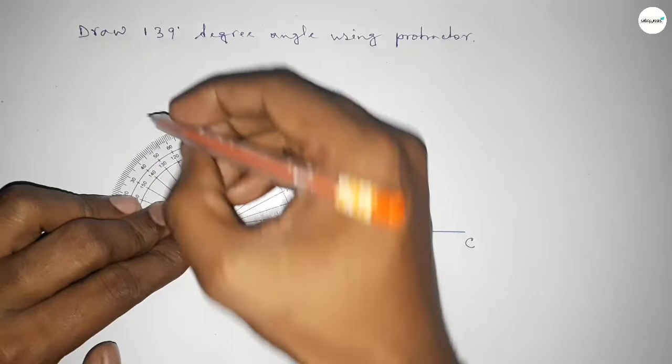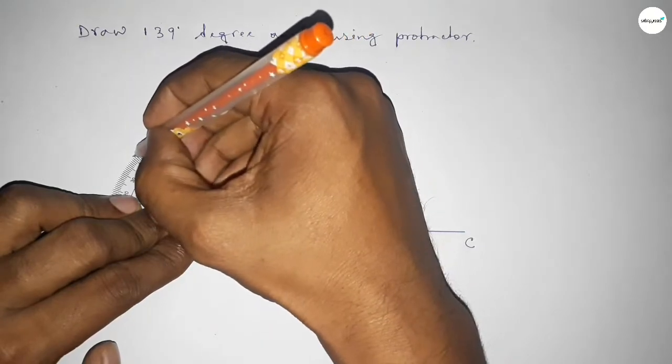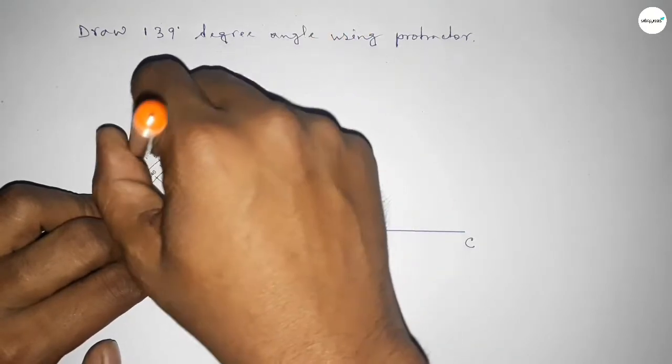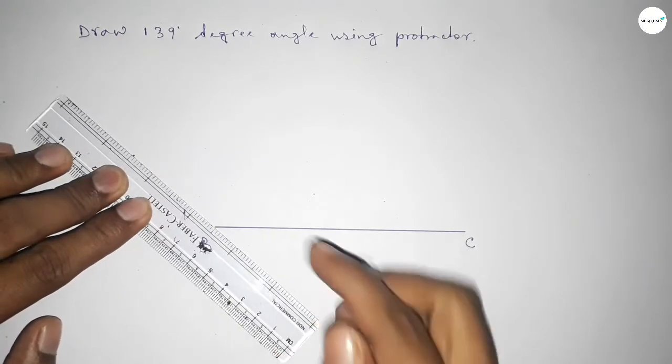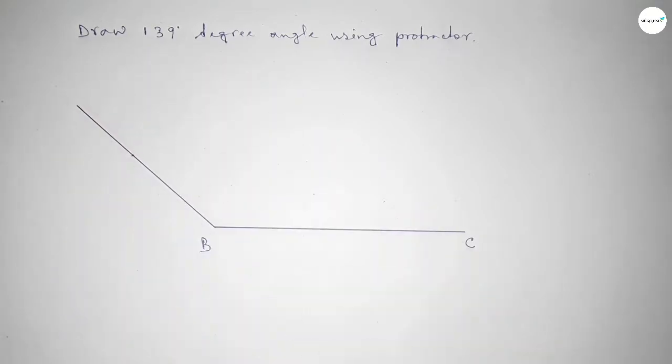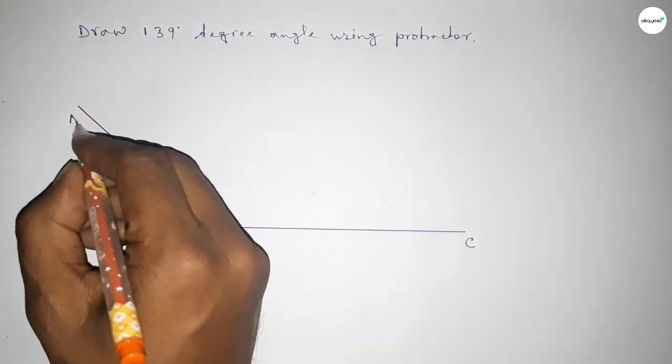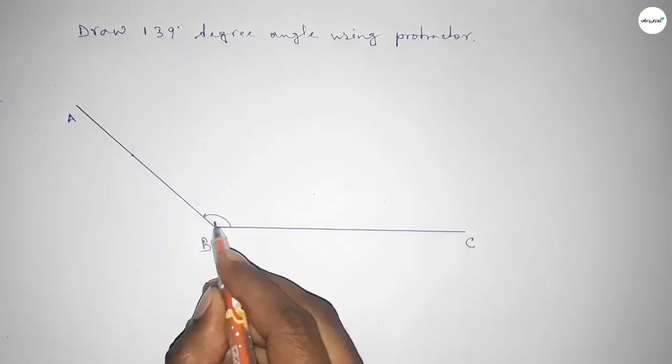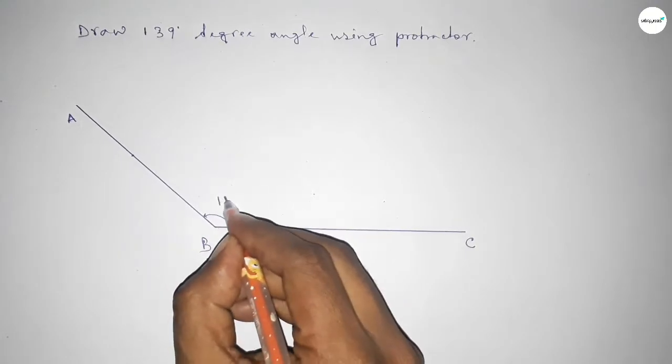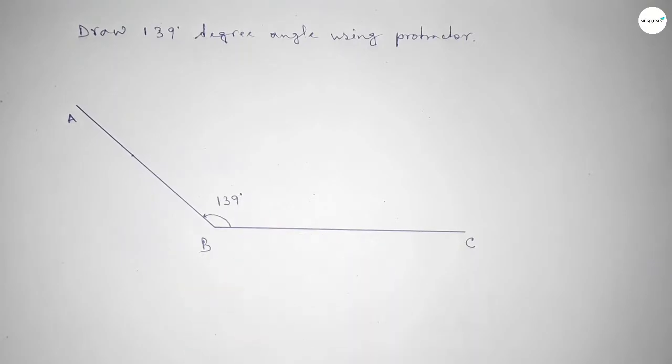Now joining this side to get a 139 degree angle. Now taking here a point A. So angle ABC up to this is 139 degrees. Therefore, angle ABC is equal to 139 degrees.